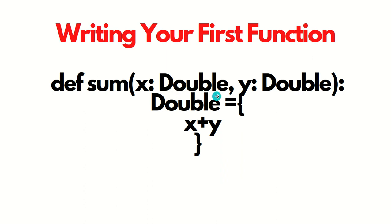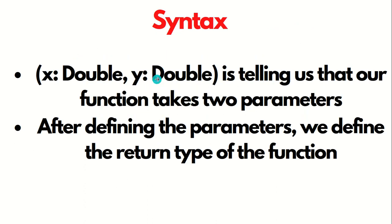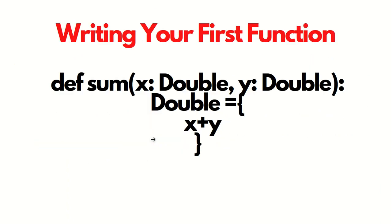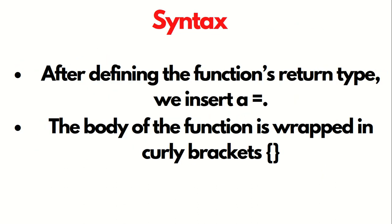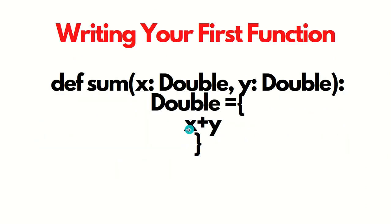We are having two function parameters: X and Y, of type double each. This tells us that our function will take two parameters. Followed by that, we specify the return type of the function. After the colon, we have the return type — it means this function will return data in the double type. Then we have the equals sign, and the function body is wrapped in curly brackets. The function body says X plus Y, which is wrapped in curly brackets. This is the meaning of the first example — this is how we can write our first function.